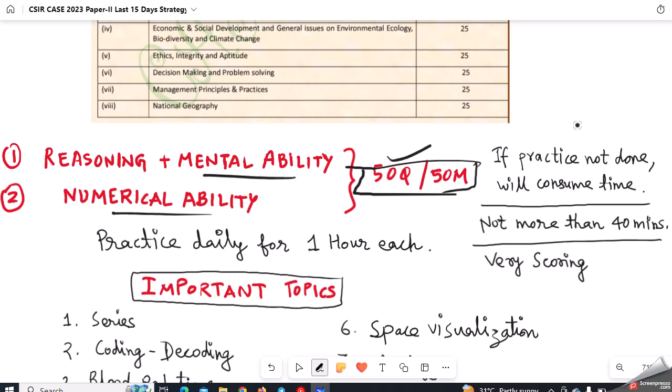The thing is they are very highly scoring sections - with good accuracy you can score maximum marks here. Almost people can score 45 plus marks if they are quite good in both reasoning and numerical ability. What I would suggest is to practice daily for one hour each. See the topics in the syllabus and complete those, or make a set of 20 questions each and try to attempt those 20 questions in 15 minutes every day. This way you can work on your speed and syllabus completion.